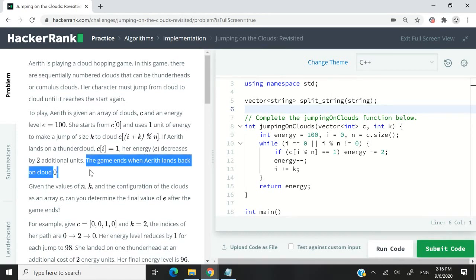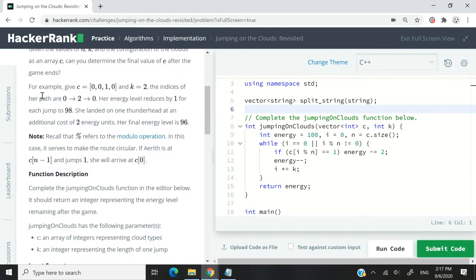There are two things that we need to keep in mind. The first thing is that the game ends when the player lands back on cloud zero, which is the first cloud in the array. And zero here refers to the index of the cloud inside the array. The second thing here is that this is a circular array. There is rotation involved. This means that whenever she hits the end of the array, she restarts her path and begins again.